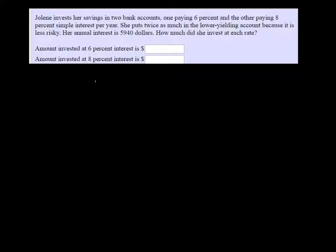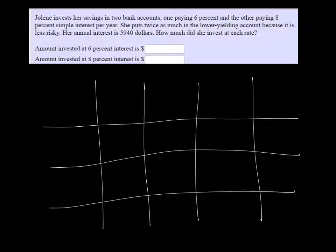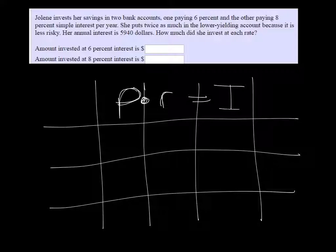I'm going to make a table. Four columns, four rows. And interest is principal times rate times time is equal to interest, but the time here is just one year, so we don't have to worry about that.